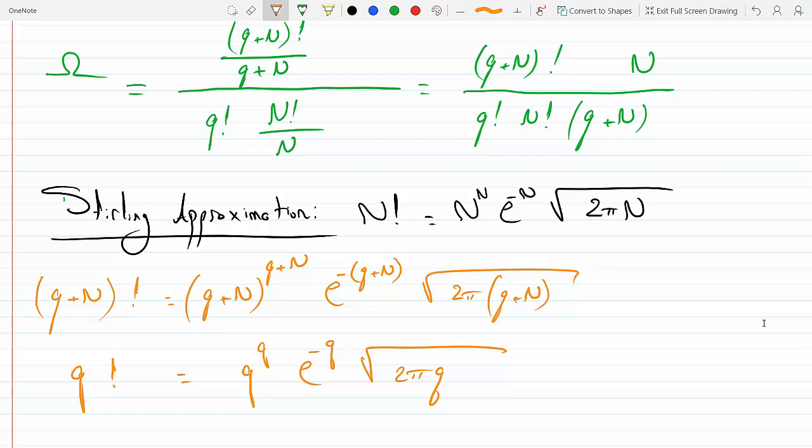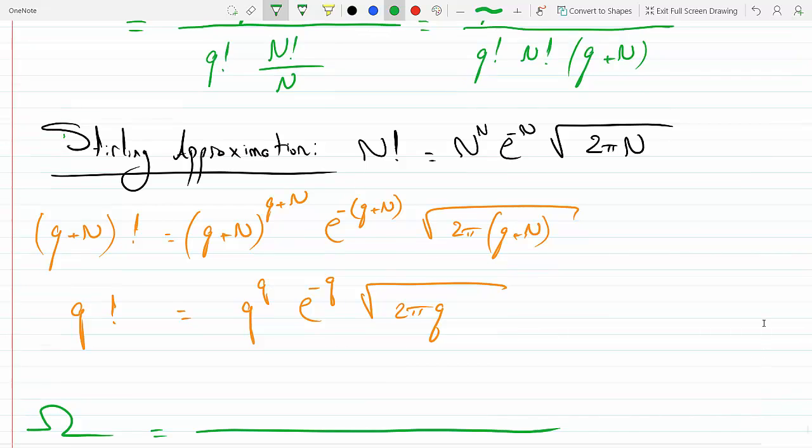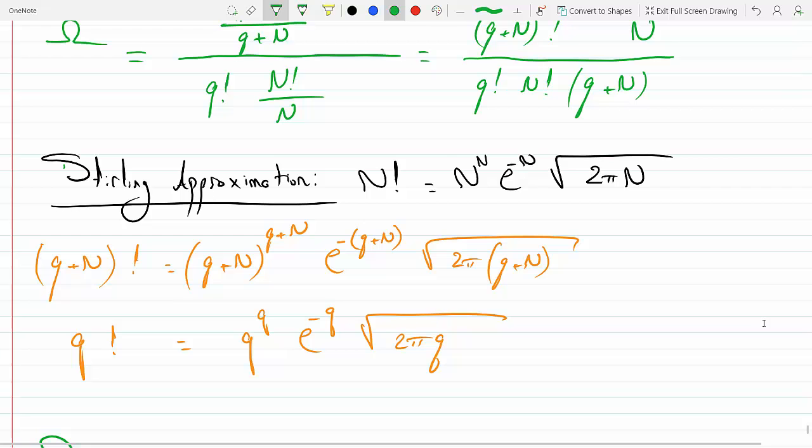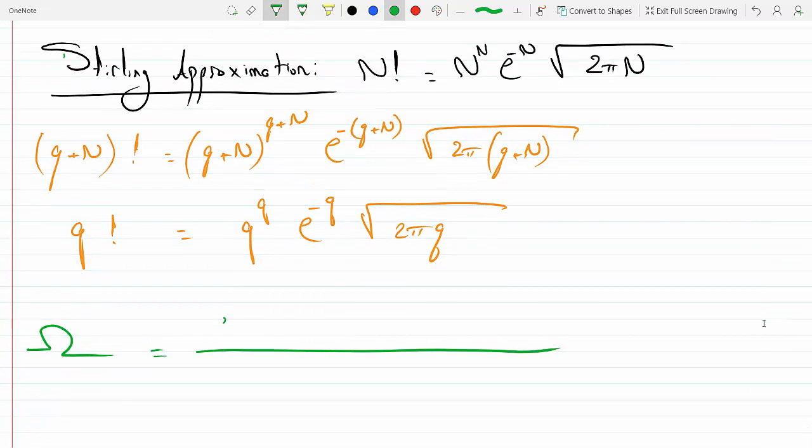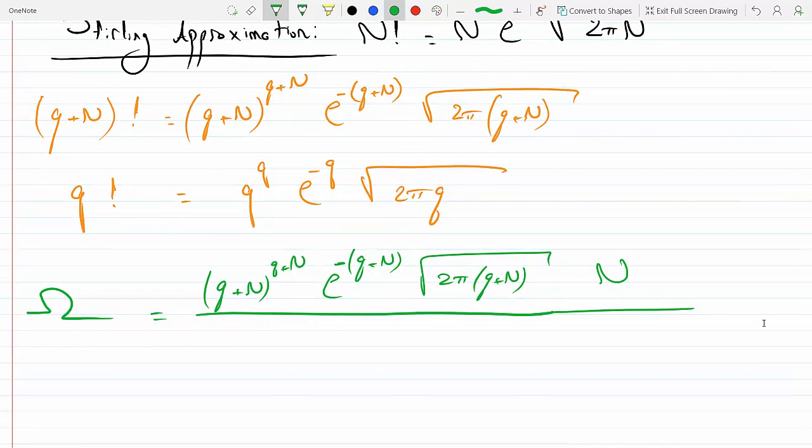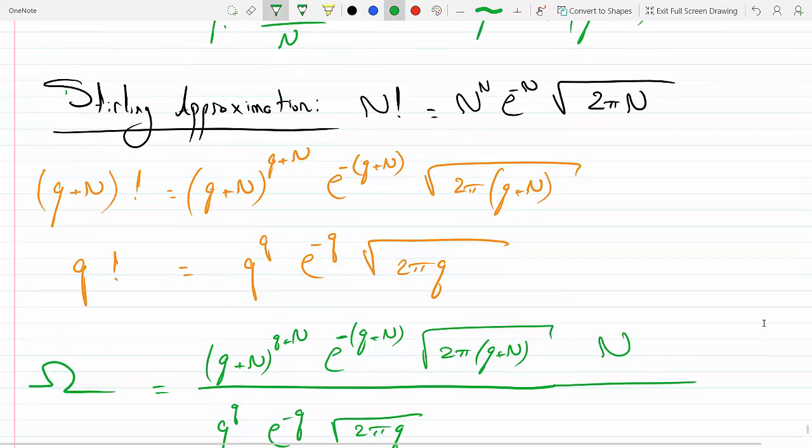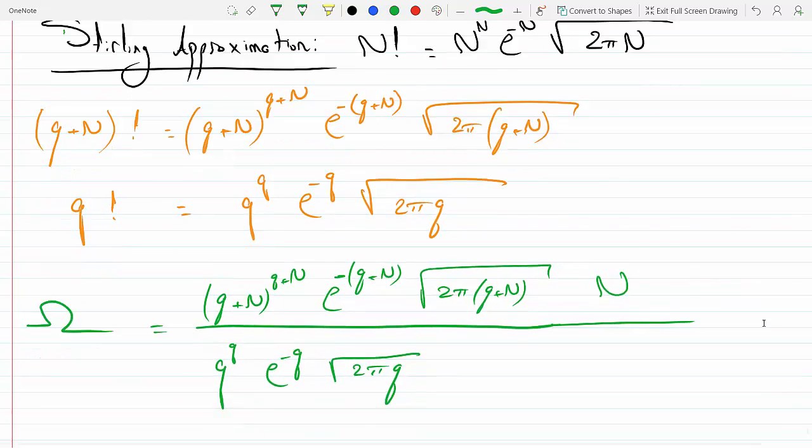I will take these approximations and plug them into the green equation. So the multiplicity now will be (q+n)! became this Sterling's approximation, and at the end here I have an n. And in the denominator, q! became this, and n! is already there.